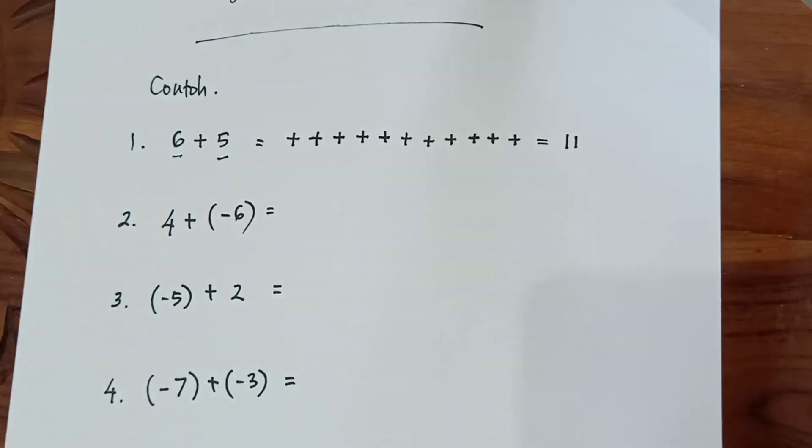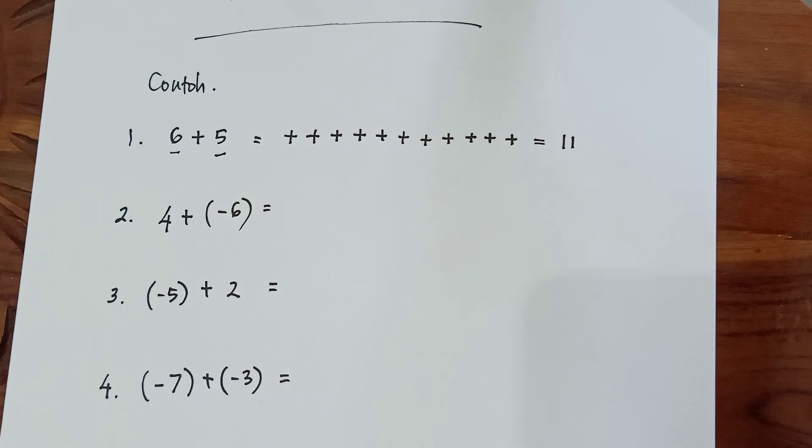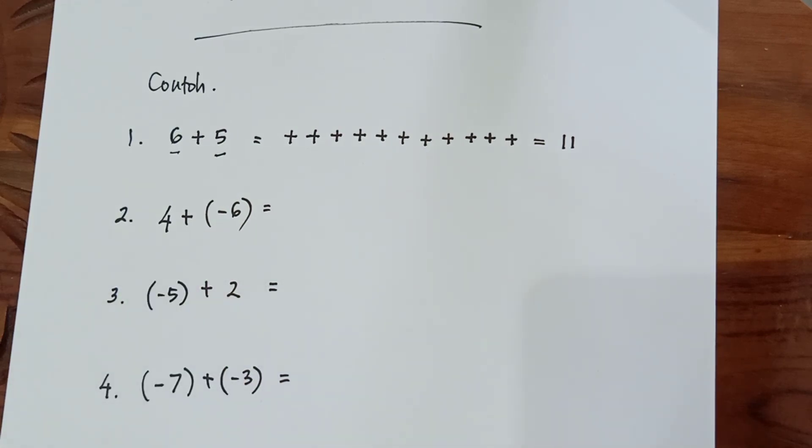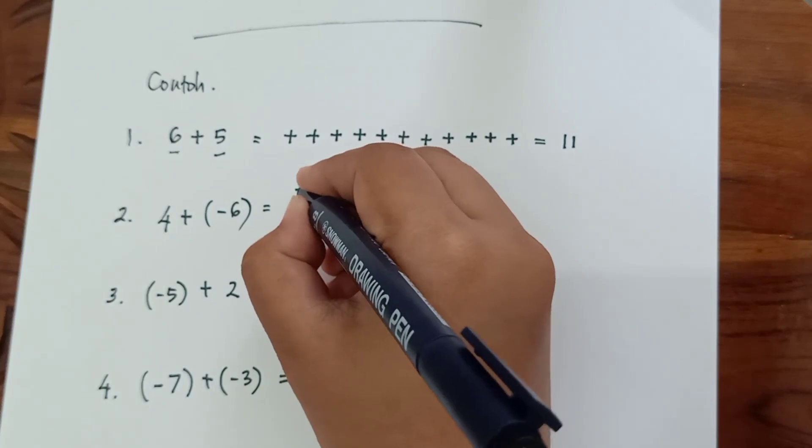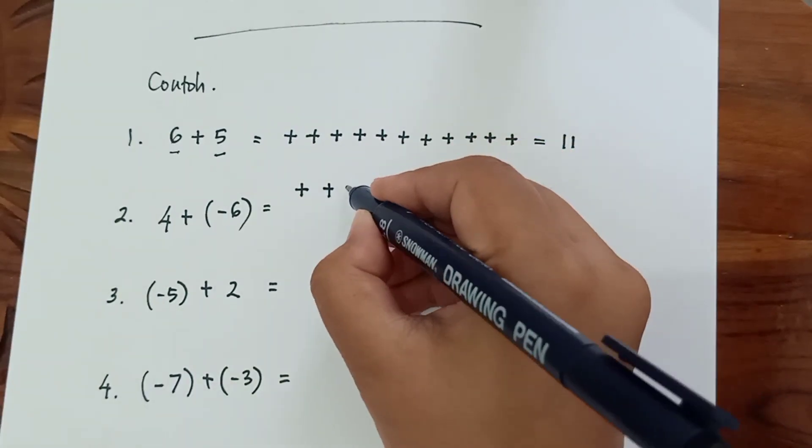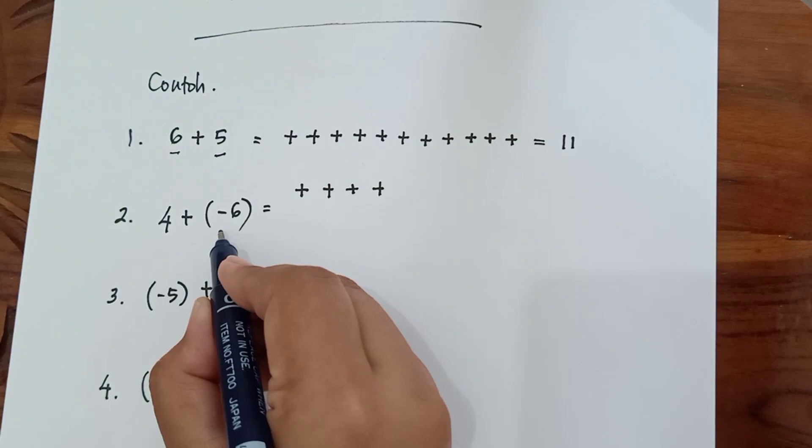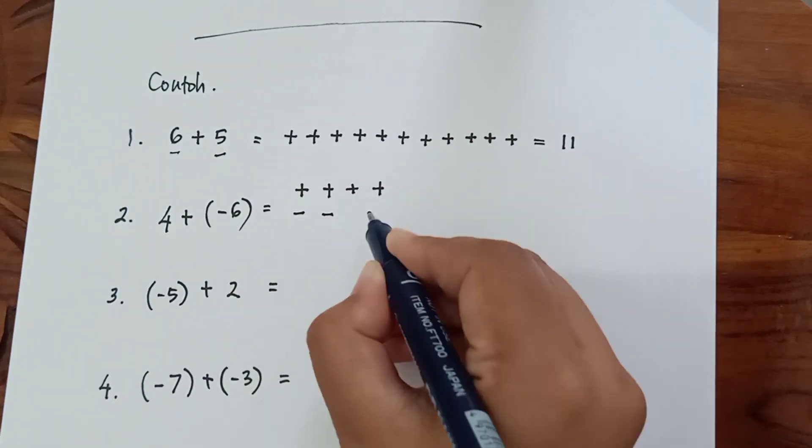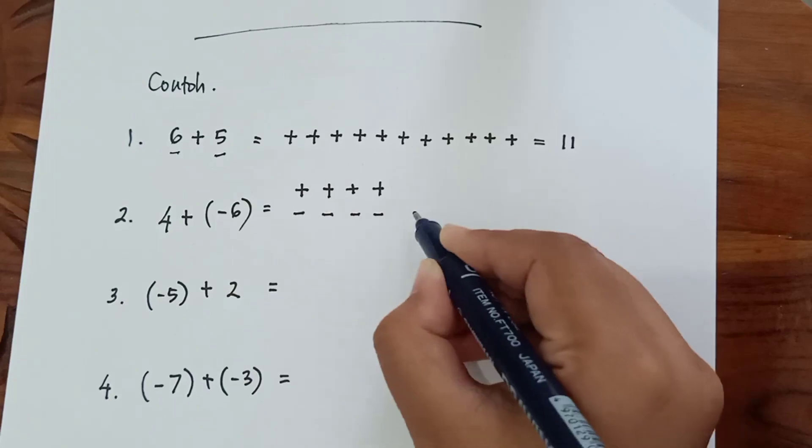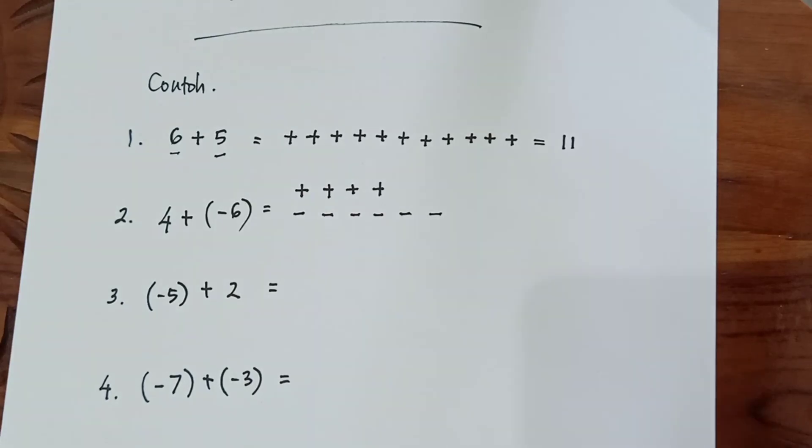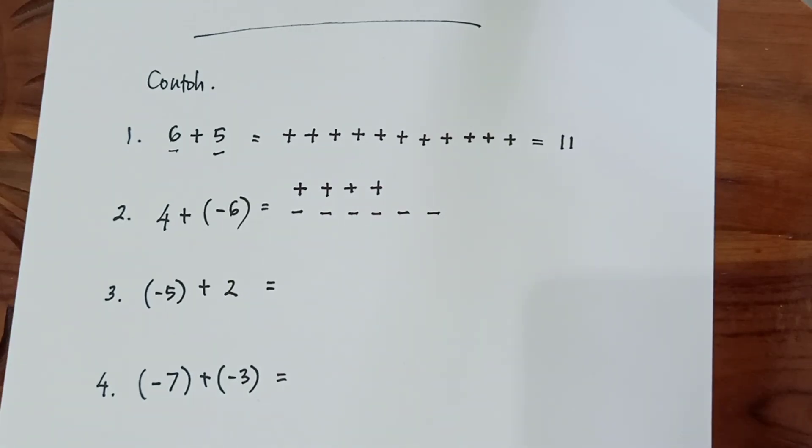Contoh nomor 2: Positif 4, maka kita buat tanda positif sebanyak 4 kali. Ditambah negatif 6. Karena berbeda tandanya, kita buat di bawah tepat tanda positif. Negatif 6: 1, 2, 3, 4, 5, 6. Bagi tanda yang memiliki pasangan, kita coret.